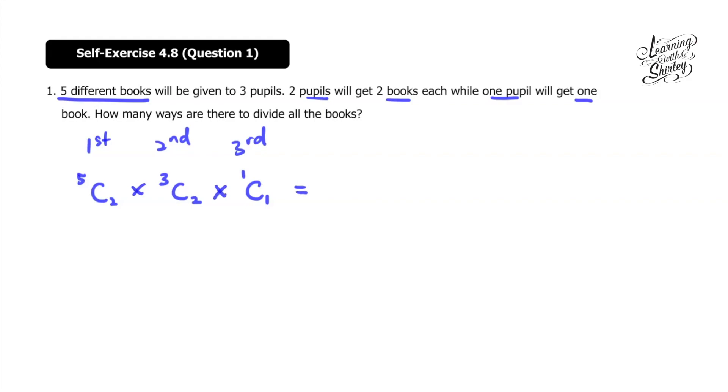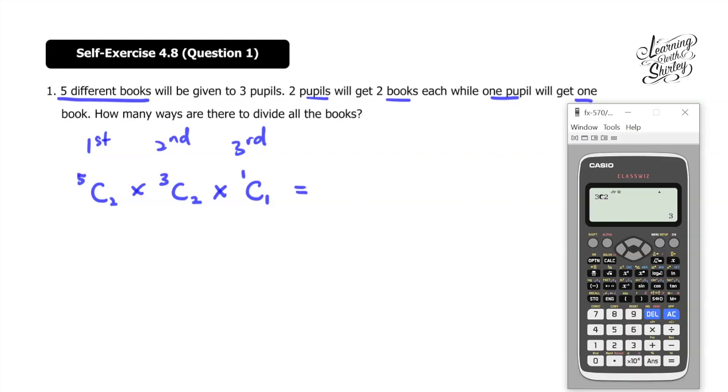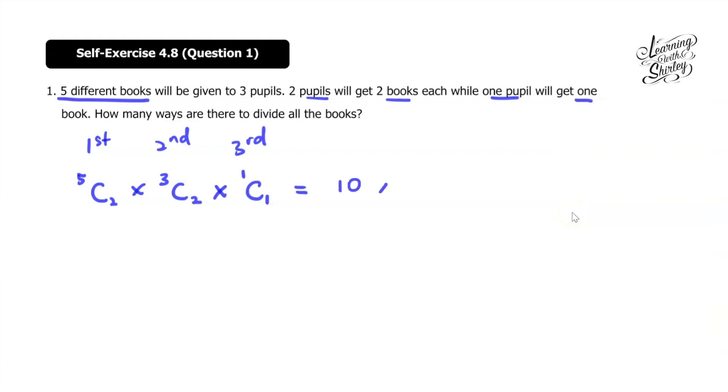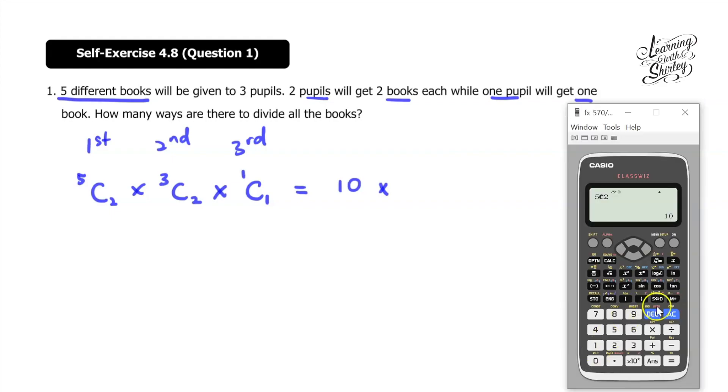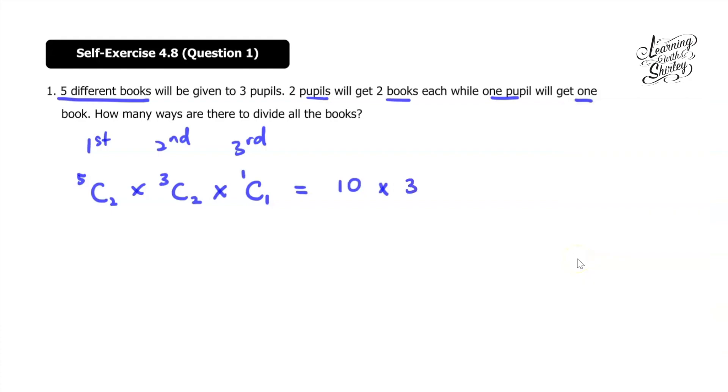So equals to, let's use the calculator to find what is 5C2. So equals to 10. So 10 times with 3C2. 3 and C2 equals to 3. And then 1C1 is 1. So equals to 10 times 3 times 1 equals to 30 ways. And this is the answer.